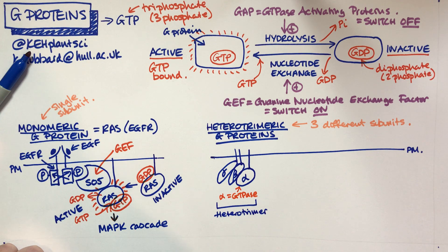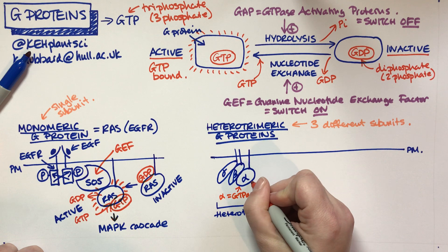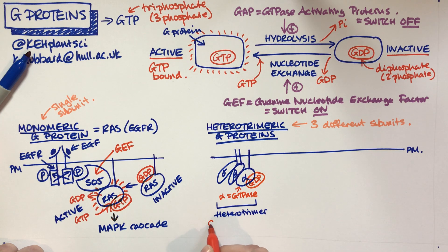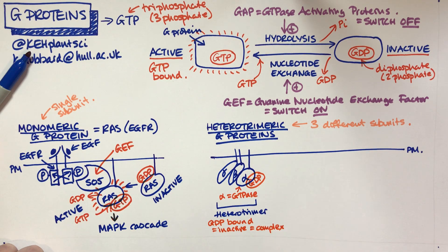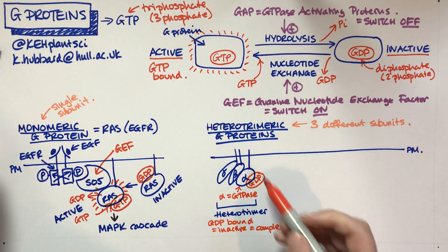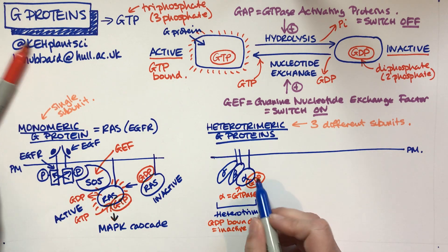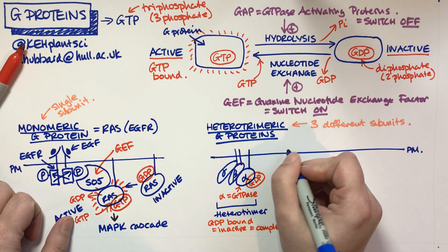In the inactive state, the alpha subunit has GDP bound to it, which means the complex is inactive. So GDP-bound equals inactive, and the three proteins — alpha, beta, and gamma — are found hanging around together as a complex in the GDP-bound phase. To activate this complex, we need to switch GDP for GTP, which happens at a receptor.